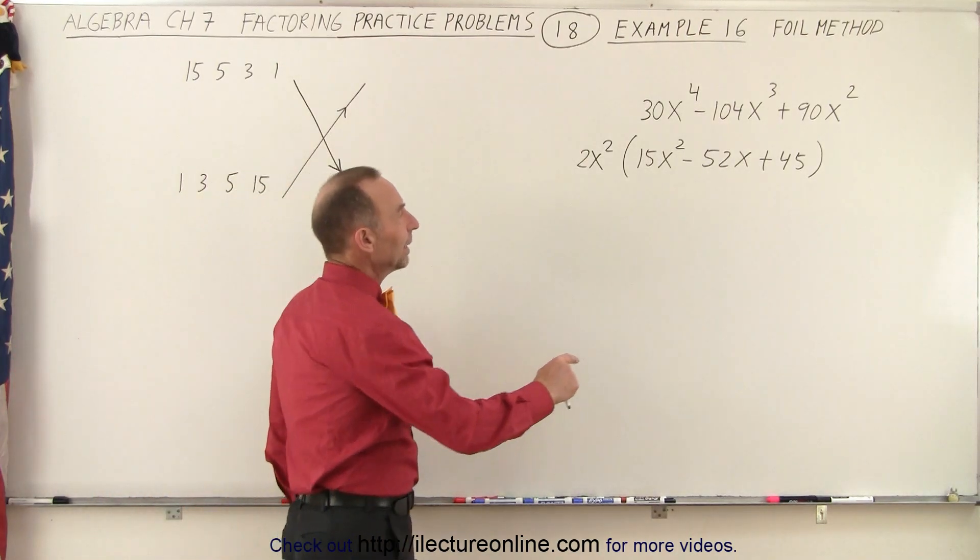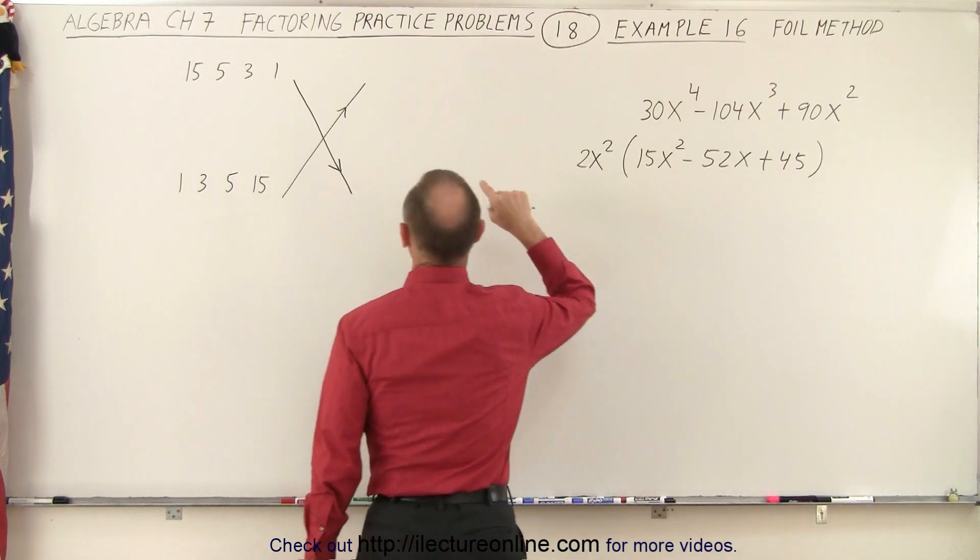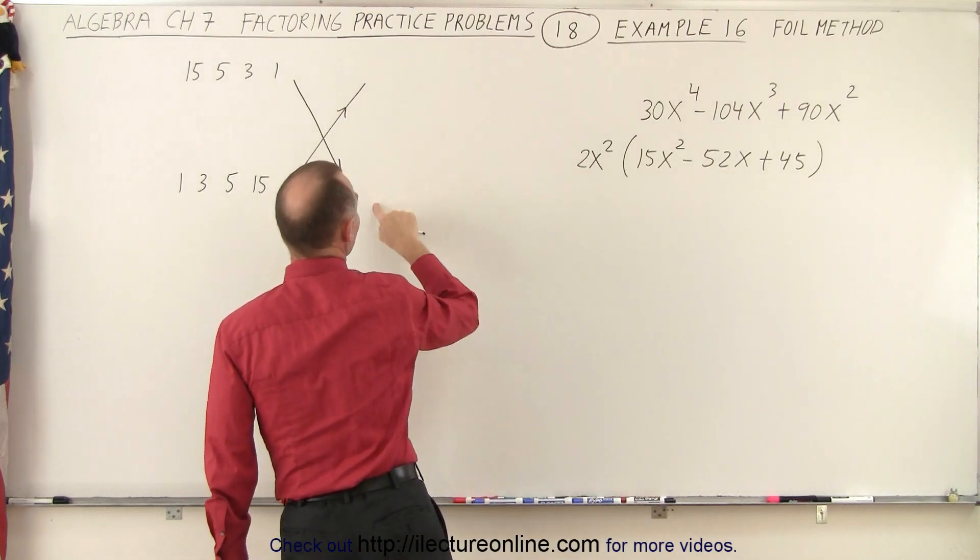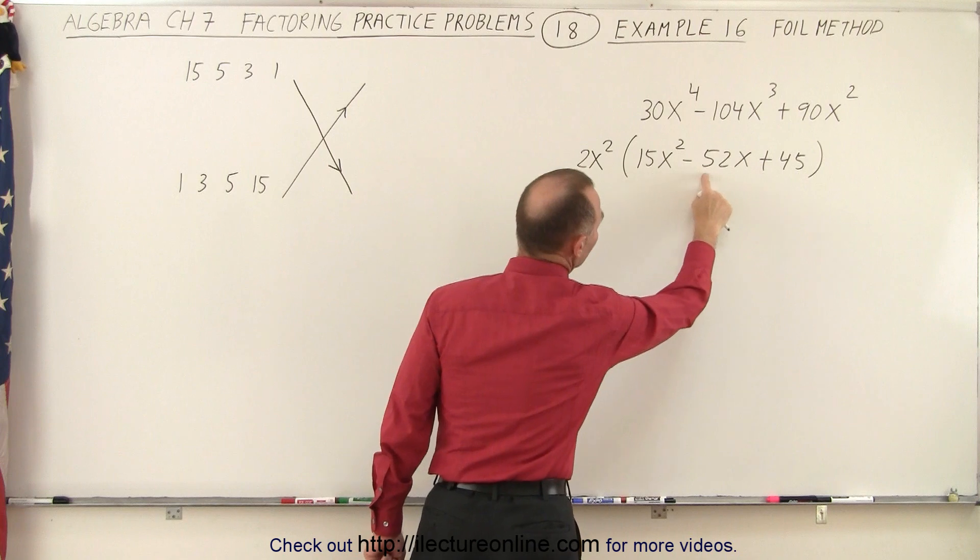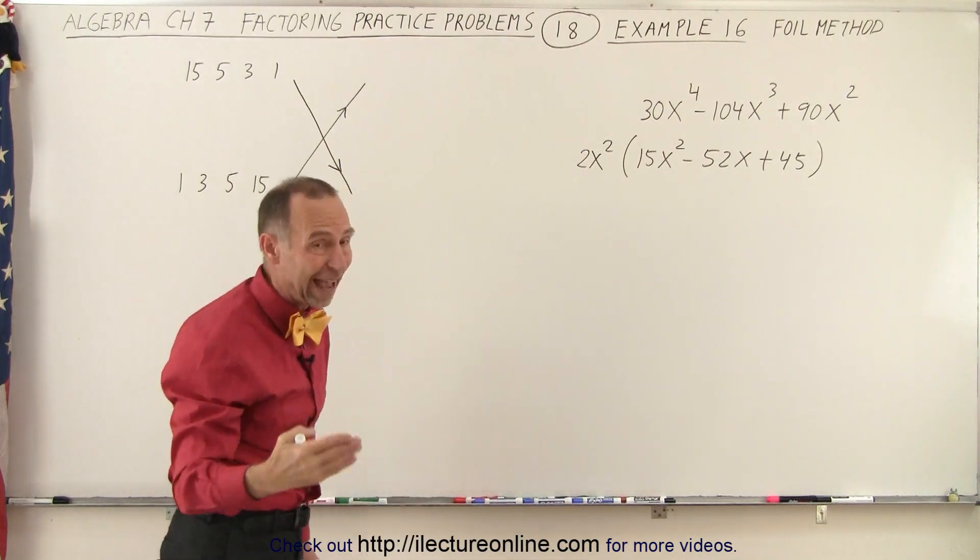Now when we look at the last term here, we notice that it's 45. So we look for all the combinations here that give us 45. But since the middle term is negative, we know that the numbers have to be negative.